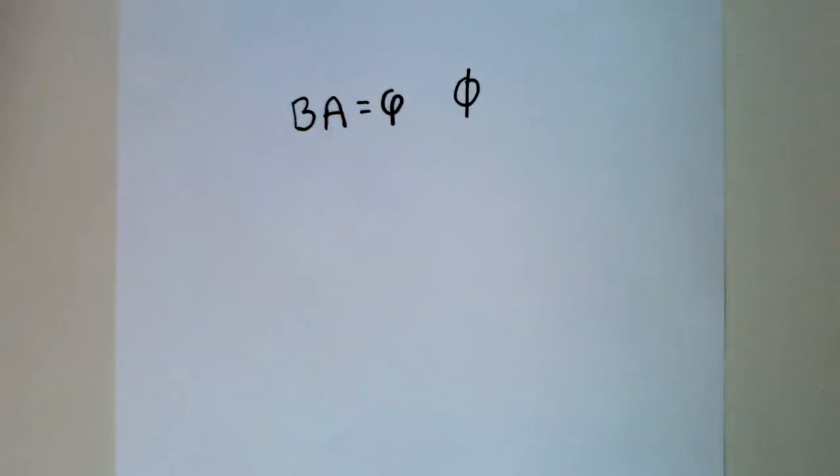For example, what is the flux linkage in a coil of 15 turns and an area of 25 centimeters squared in a field strength of 5T. So the flux linkage is equal to N times the magnetic flux.